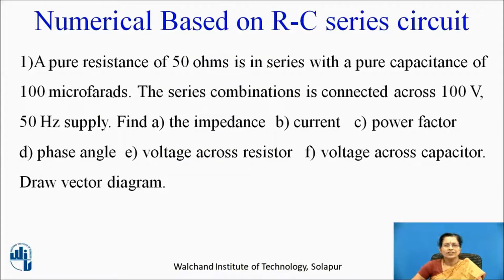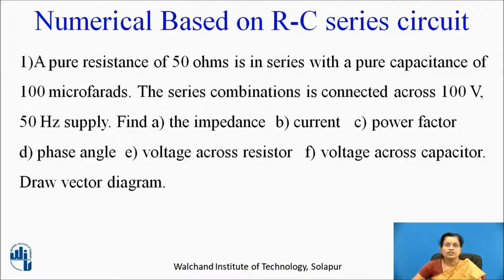So let us see the first numerical. A pure resistance of 50 ohms is in series with pure capacitance of 100 microfarads. The series combination is connected across 100 volt, 50 hertz supply. Find: A the impedance, B current, C power factor, D phase angle, E voltage across resistor, F voltage across capacitor, and draw vector diagram.